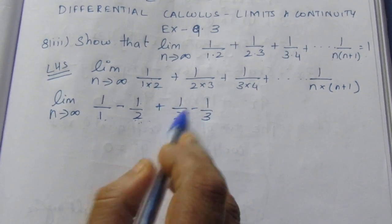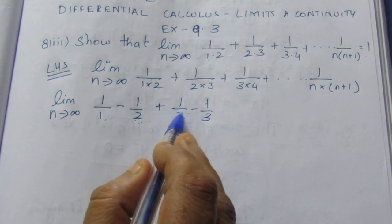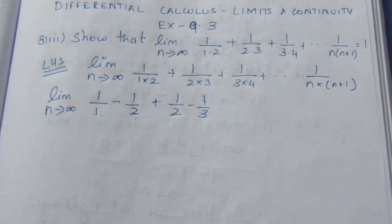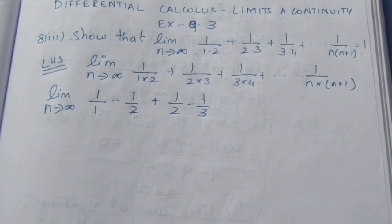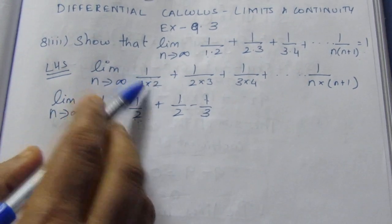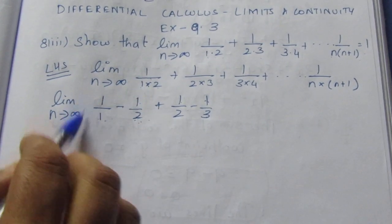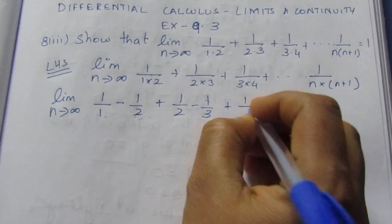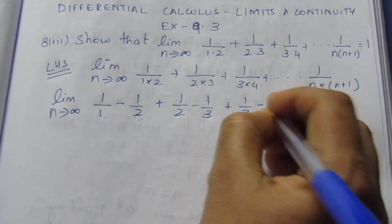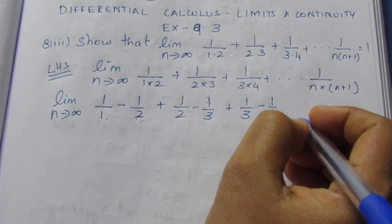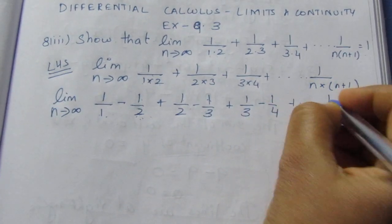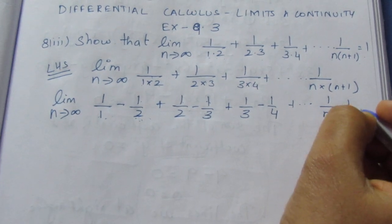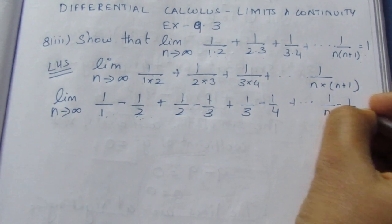Similarly, 3-2=1, so 1/(2×3) = 1/2 - 1/3, and so on. We can select each term as 1/n - 1/(n+1). So the series becomes: (1/1 - 1/2) + (1/2 - 1/3) + (1/3 - 1/4) + ... up to (1/n - 1/(n+1)).